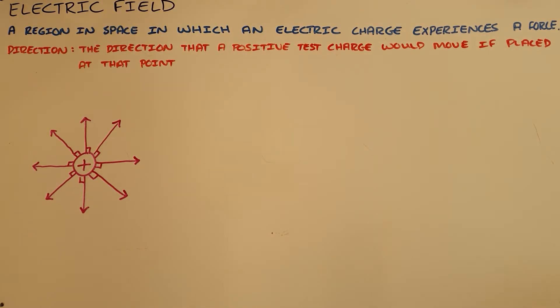We say that these field lines are directed radially outward. That is how we determine the electric field direction. What is also important here is to determine the electric field strength.